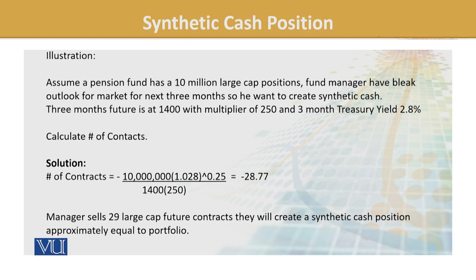Let's look at this practically. If the market goes up, our share values go up — but since we shorted the futures, we incur a loss there. One side gains, one side loses, and they balance out — we earn only the risk-free return. If the market goes down, share values fall, but we gain from our short futures position. So the market movement no longer affects us — we earn as if we had invested in T-bills. This is the beauty of these synthetic strategies.